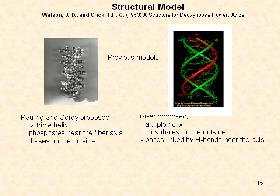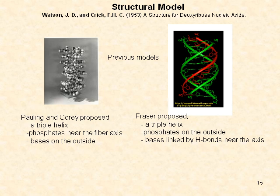An accurate structural model for DNA was proposed by Watson and Crick in 1953, though there had been previous models. Pauling and Corey proposed a triple helix with phosphates near the fibre axis and bases on the outside of the structure. Fraser also proposed a triple helix; however, he accurately predicted that phosphates were on the outside with bases linked by hydrogen bonds near the axis.